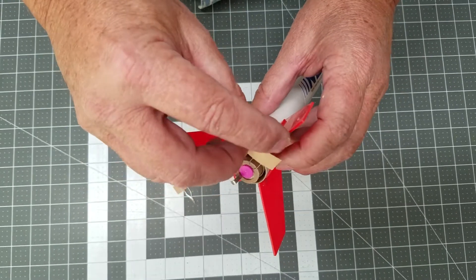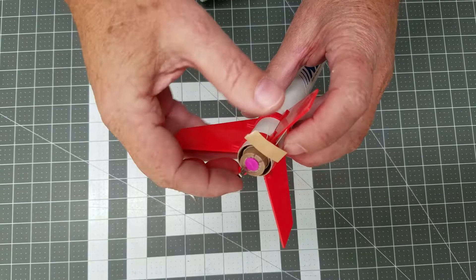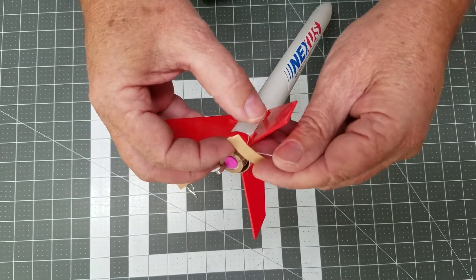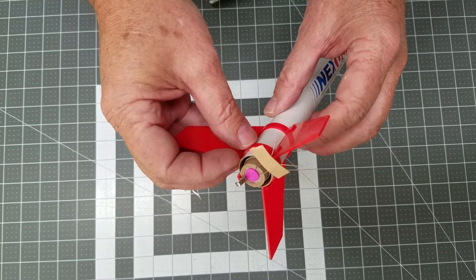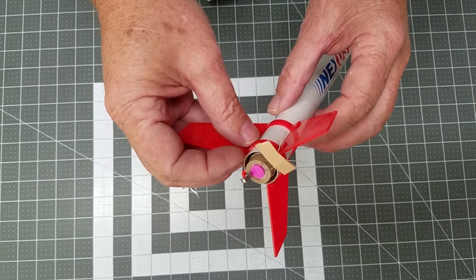Once it's in, you separate the igniter at the ends by spreading out the leads so that you can contact them with the igniter clips without shorting. And that's it.